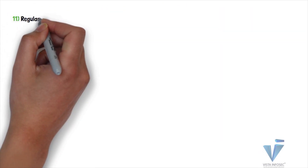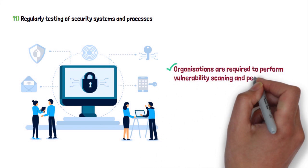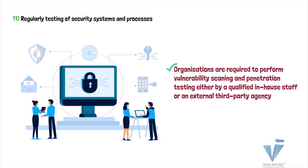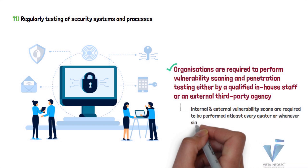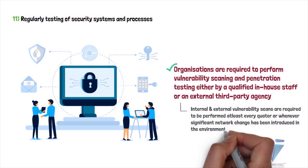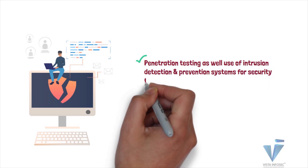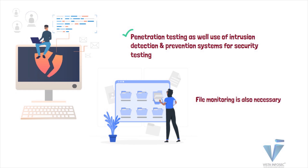Requirement 11, which is the regular testing of security systems and processes, requires organizations to perform regular vulnerability scanning and penetration testing, either by a qualified in-house staff or an external third-party agency. They must test every quarter for wireless access points which may be used for gaining unauthorized access. Internal and external vulnerability scans are required at least every quarter or whenever a significant network change has been introduced. Other ongoing requirements include penetration testing, use of intrusion detection and prevention systems, and file monitoring — where the system performs file comparison every week to detect unnoticed changes.